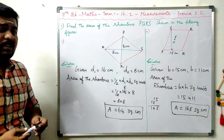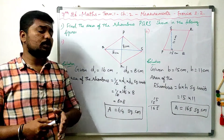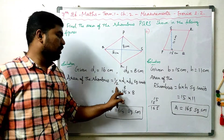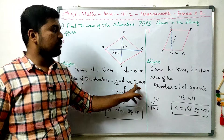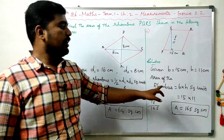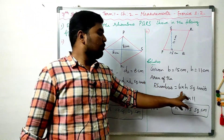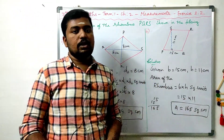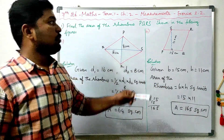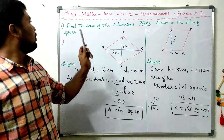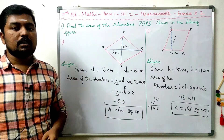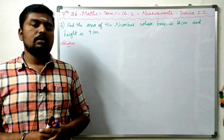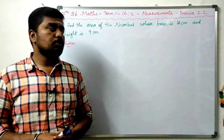Rhombus is easy. There are two formulas: when diagonals are given, the area is half into D1 into D2 square units; when base and height are given, the area is B into H square units. Now, exercise 2.2 first question is done. Moving to the second question.